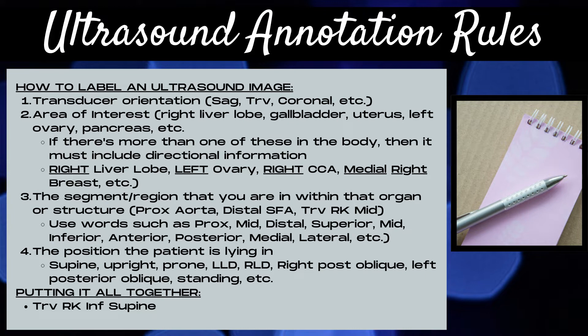The third thing that should be included within your general ultrasound image annotations is the segment or region that you are within that organ or structure. These are directional words, such as proximal aorta, distal SFA, or transverse right kidney mid. Words used in this category should be proximal, mid, distal, superior, inferior, anterior, posterior, medial, lateral, etc. So not only do you need to include if you're in the left or the right kidney, but if you're transverse within that kidney, you also need to specify whether you're in a superior, mid, or inferior position.